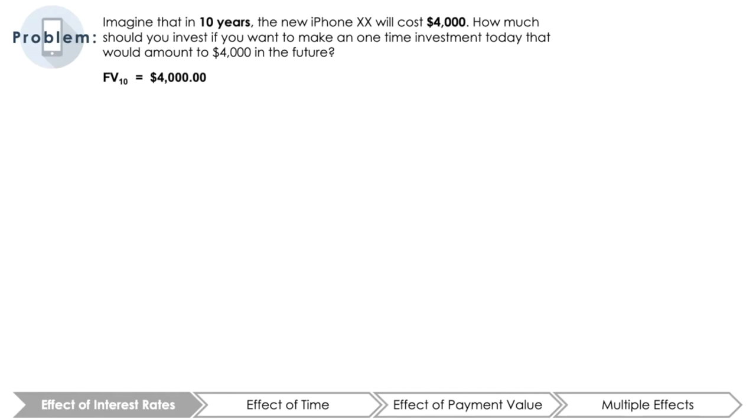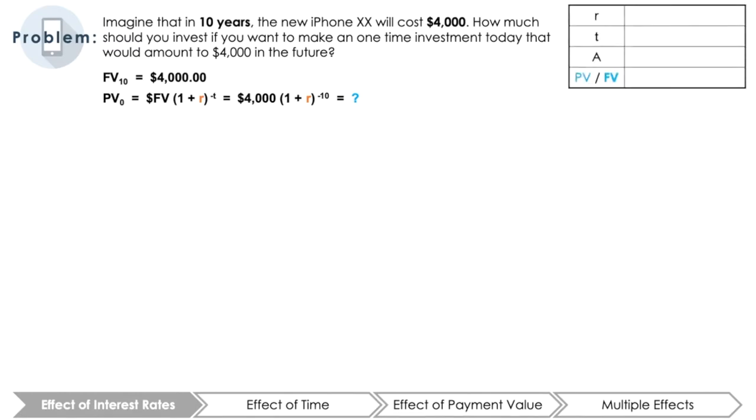As we have learned in previous videos, we would discount $4,000 by the effective annual rate over 10 years to find how much the $4,000 iPhone 20 would cost in today's dollars, i.e., the present value. Today, we will use this iPhone scenario to explore how changing the effective annual rate, time, and payment amounts will change the calculated present value.